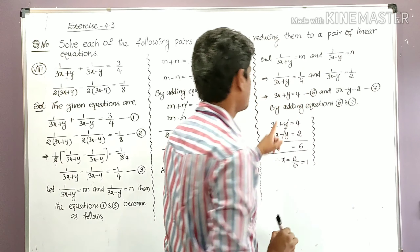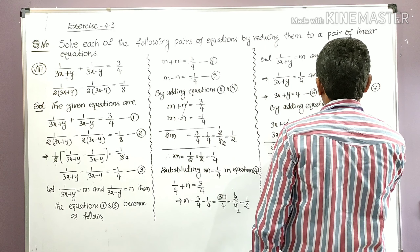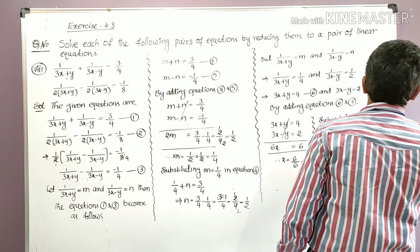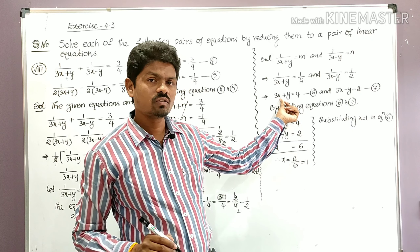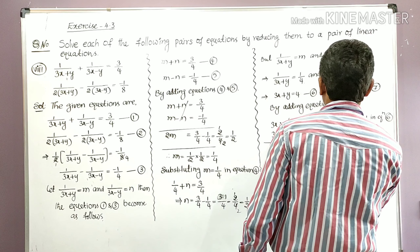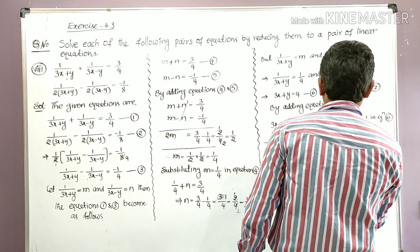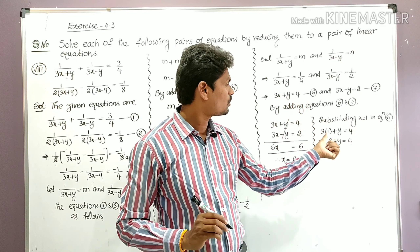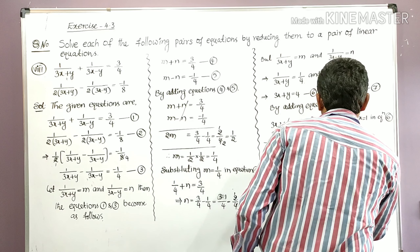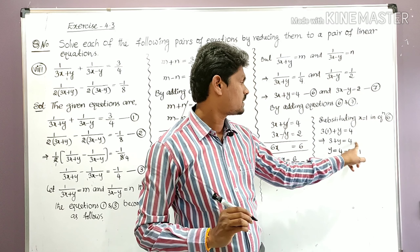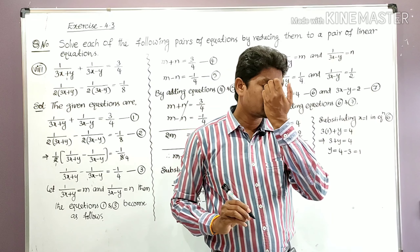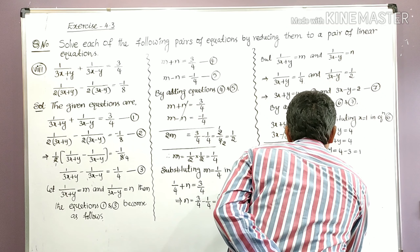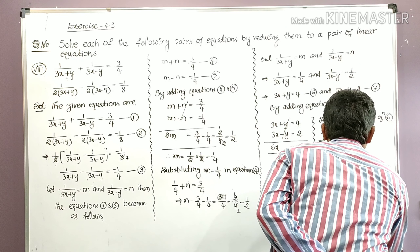Substituting x = 1 in equation 6: equation 6 is 3x + y = 4. That gives 3 × 1 + y = 4, so 3 + y = 4. Taking 3 to the right side: y = 4 − 3 = 1. Therefore the solution is x = 1 and y = 1.